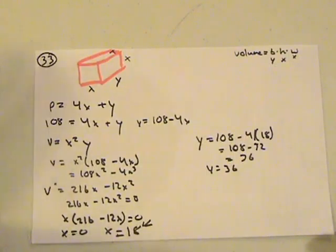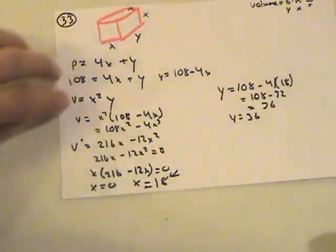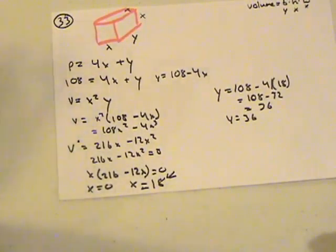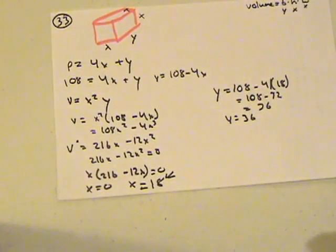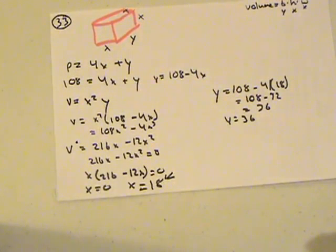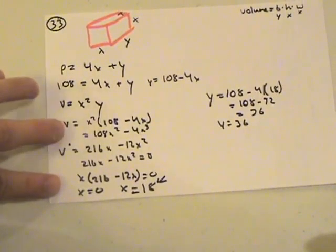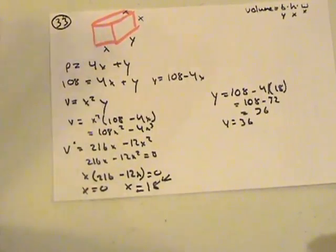Now we have to determine the derivative. And we get 2x multiplied by 2, 216 minus 12x. And that we will use to set to zero. And we figure out we get two x's. We get x equals zero and x equals 18.